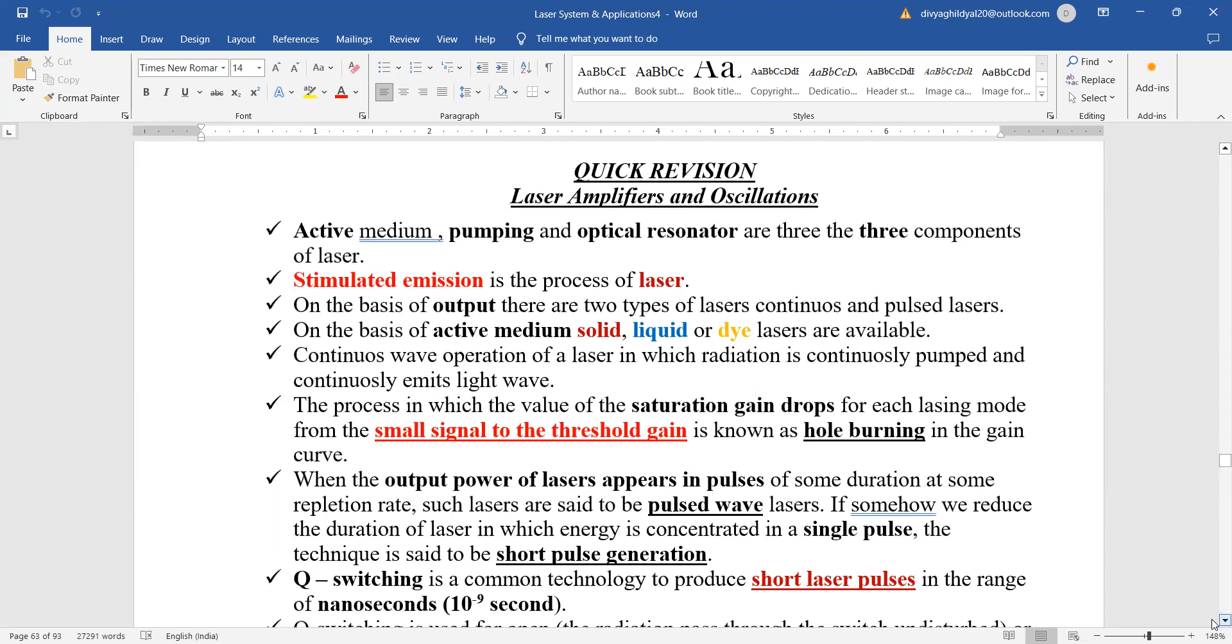Quickly let us revise the whole unit 3. Active medium, pumping, and optical resonator are the three essential components with which a laser is made. Principle of laser action is stimulated emission.